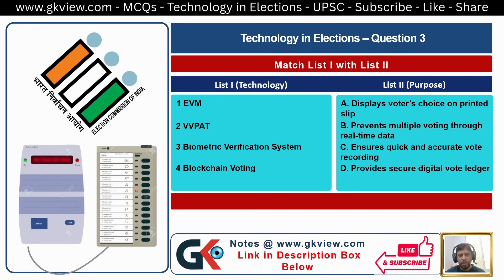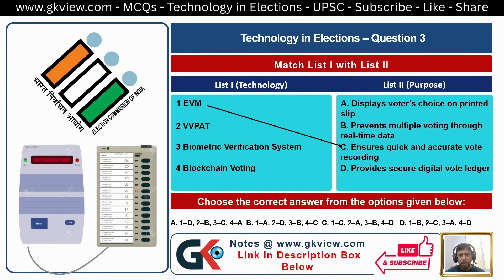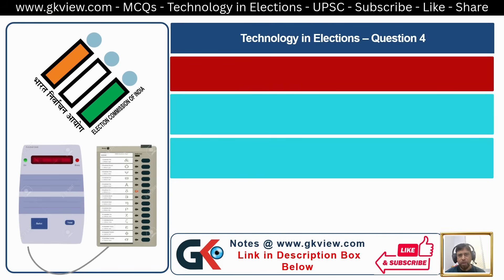Now we can match List 1 with List 2. EVM matches with C: Ensures quick and accurate vote recording. VVPAT matches with A: Displays voter's choice on printed slips. Biometric verification matches with B: Prevents multiple voting through real-time data. Blockchain voting matches with D: Provides secure digital voter registration. So the answer is 1-C, 2-A, 3-B, 4-D.